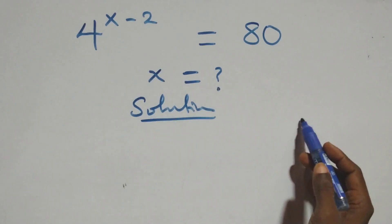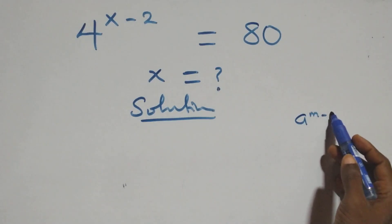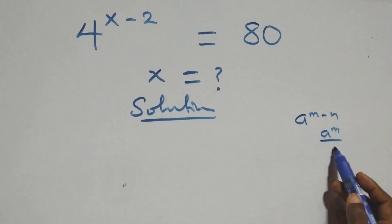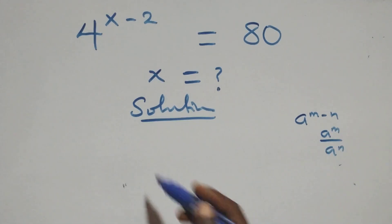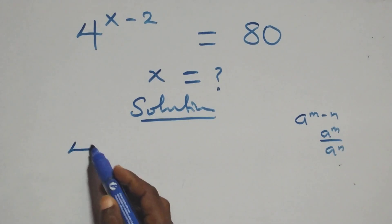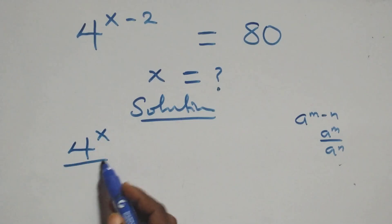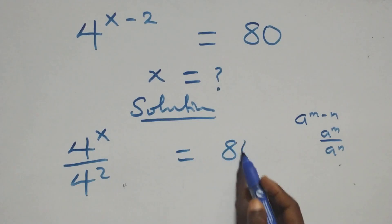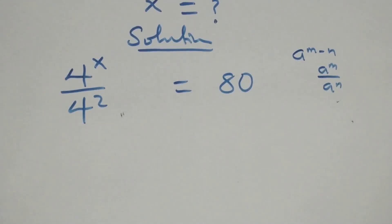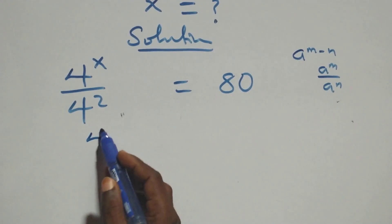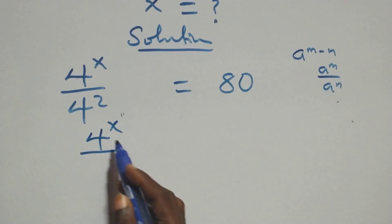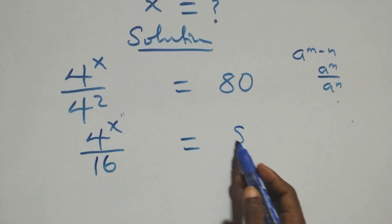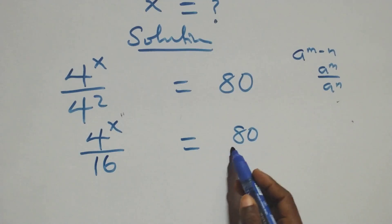What we have here is: a raised to power n minus n is the same thing as a raised to power n over a raised to power n. So 4 raised to power x over 4 squared equals 80. This is the same as 4 raised to power x over 16, which equals 80 over 1.